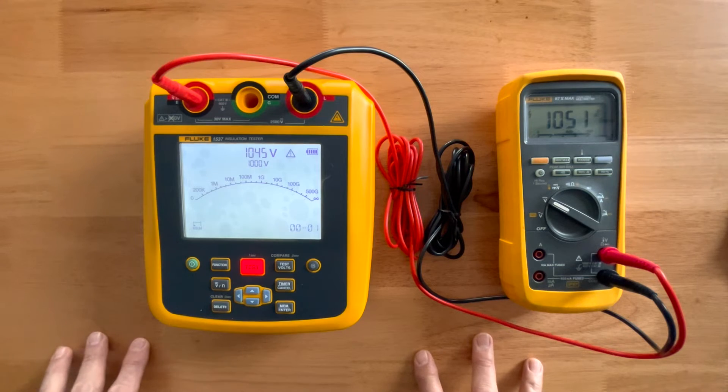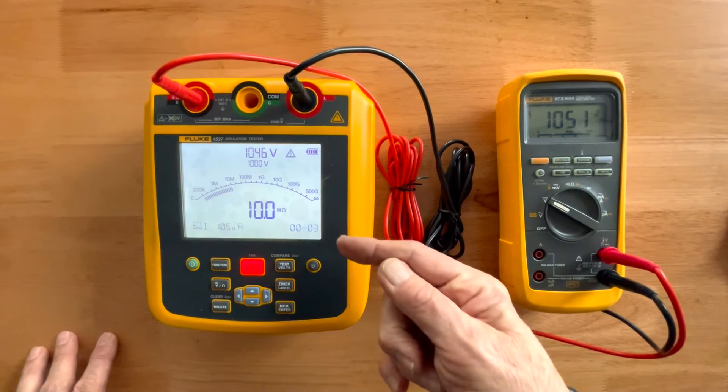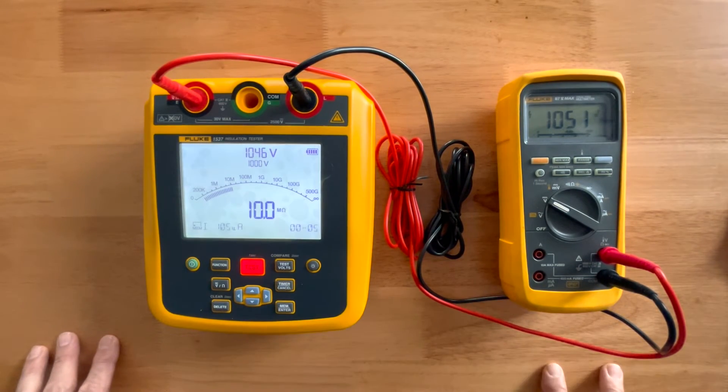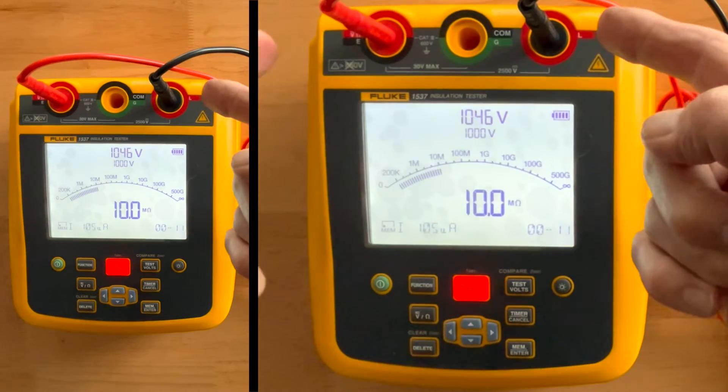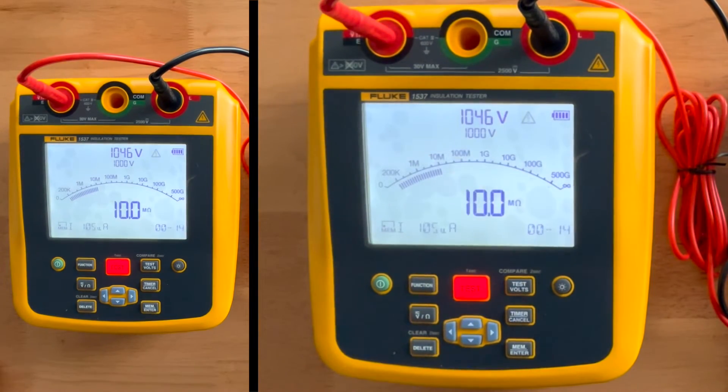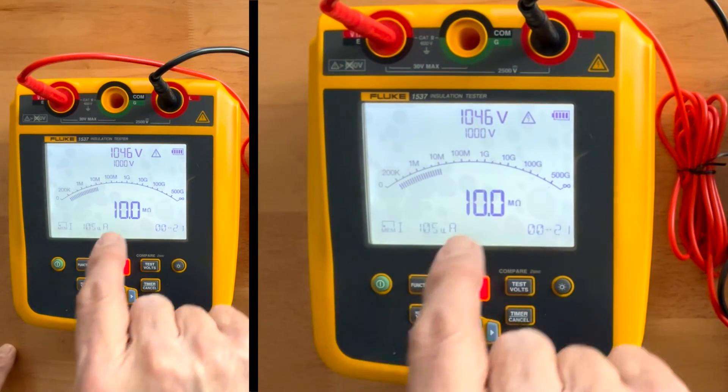So when I start the test, you'll notice immediately we light up in red. We also start counting out in time. And two things become immediately notable. First off, it is now flashing, telling me this is a live output off the terminals on the top. The range is 1,000 volts. We're actually outputting 1,046 volts. And I'm going to get both an analog indication as well as a digital readout.